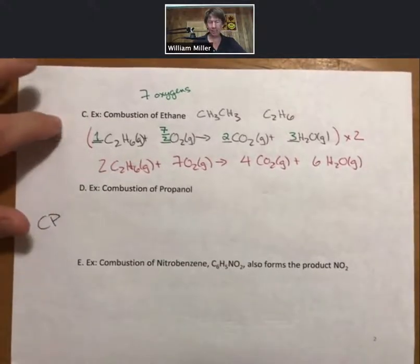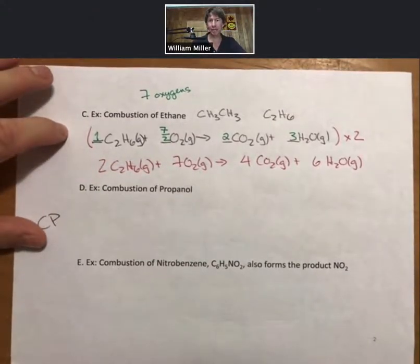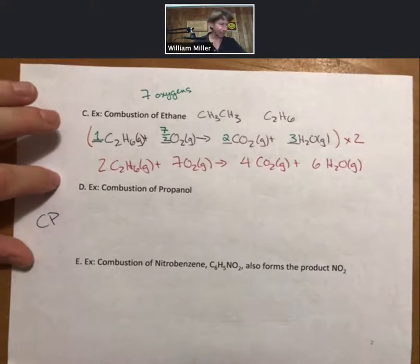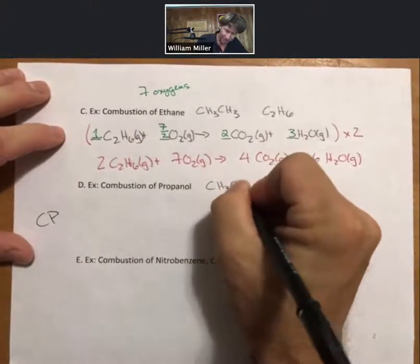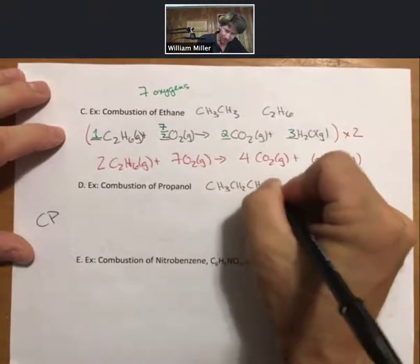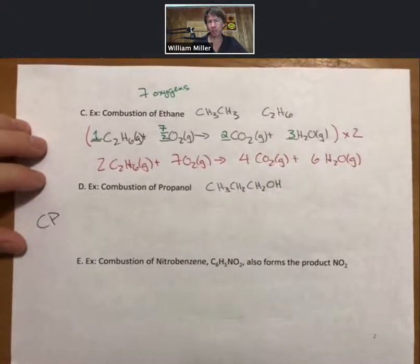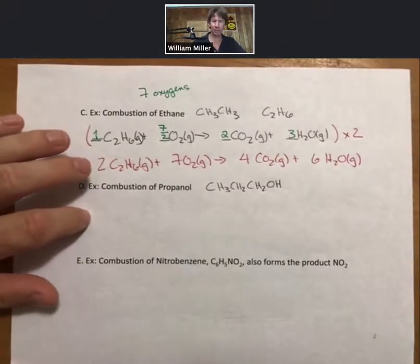Combustion of propanol is going to be similar to combustion of ethane. Except that combustion of propanol, we're going to have CH3, CH2, CH2, OH as the formula that you will condense and then use in the companion problem.